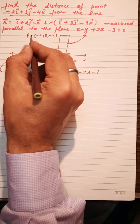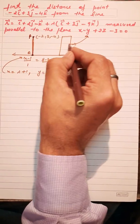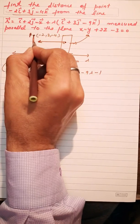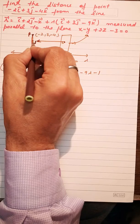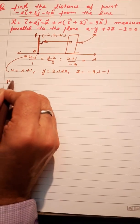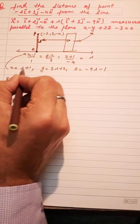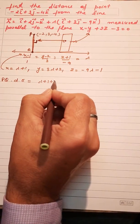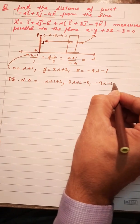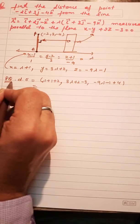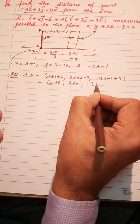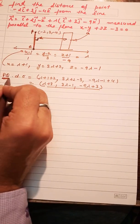Since PQ is parallel to the plane, the normal of the plane and the line PQ are perpendicular to each other. The direction ratios of PQ are: (λ+1+2), (3λ+2-3), and (-9λ-1+4), which simplifies to (λ+3), (3λ-1), and (-9λ+3).